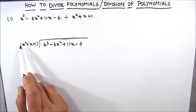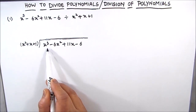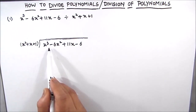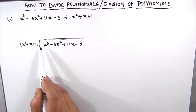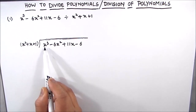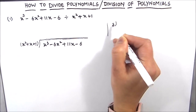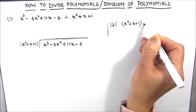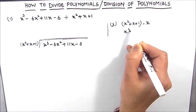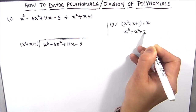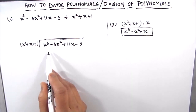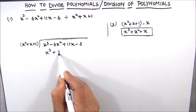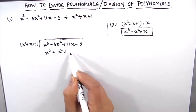The third step is to multiply the divisor with the term required to get the first term of the dividend. Here we have x squared and we need to produce x cubed, so we multiply x squared by x. We multiply the whole polynomial x squared plus x plus 1 by x, giving us x cubed plus x squared plus x. This is the term we subtract from the dividend, aligning like terms.